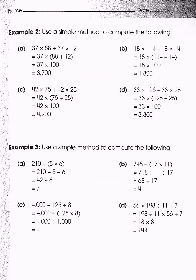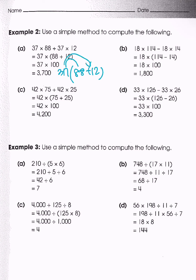Now we'll go over two examples. We have 37 times 88 plus 37 times 12. We can see that 37 is repeated twice — one multiplication plus another multiplication. So we take 37 out and group: 37 times (88 plus 12). Doing 88 plus 12 gives 100, so it becomes 37 times 100, which is much easier to work with.